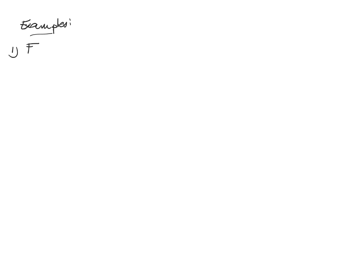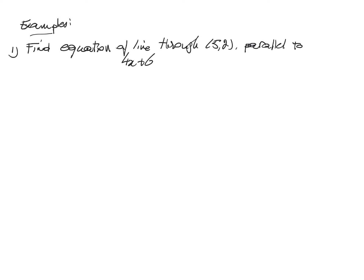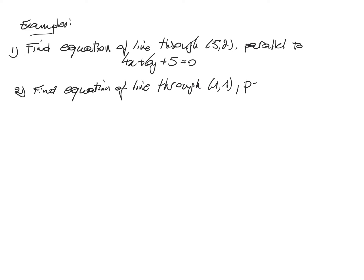Let us now apply these two concepts. First, find the equation of the line through the point N which is parallel to the line 4x plus 6y plus 5 equals 0. For the second problem, find the equation of the line through the point N which is perpendicular to the same line 4x plus 6y plus 5 equals 0.